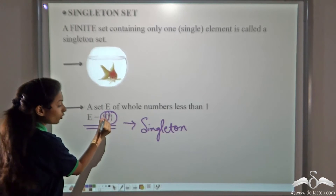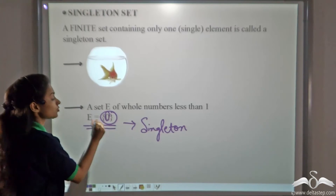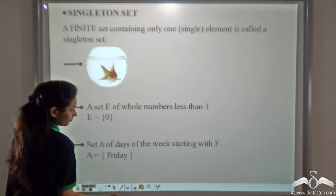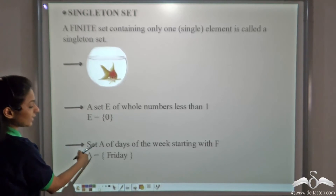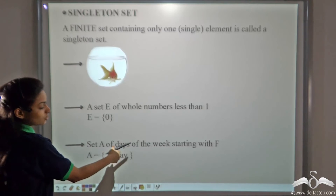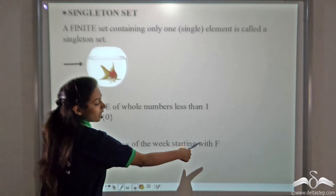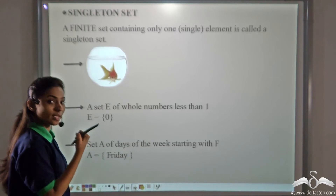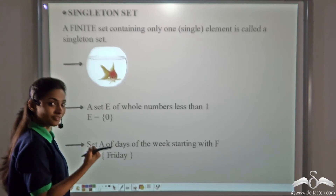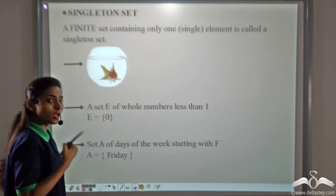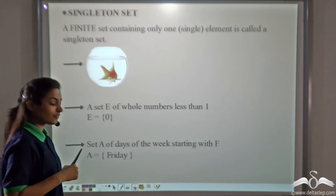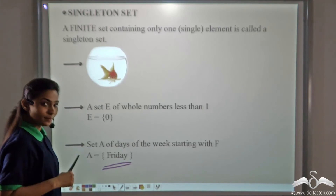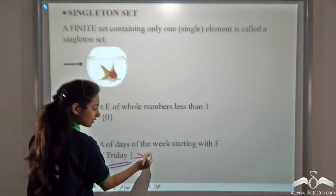Note that zero here is an element — zero is not the number of elements. Now, set A of days of the week starting with the letter F. The days of the week are Monday, Tuesday, Wednesday, Thursday, Friday, Saturday, Sunday. Which day starts with the letter F? Friday. So we have only one element here, and this is also a singleton set.